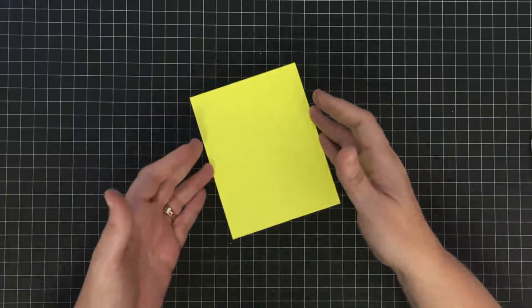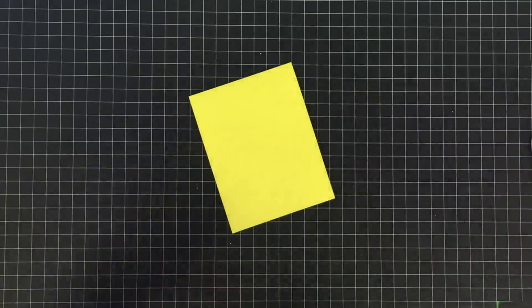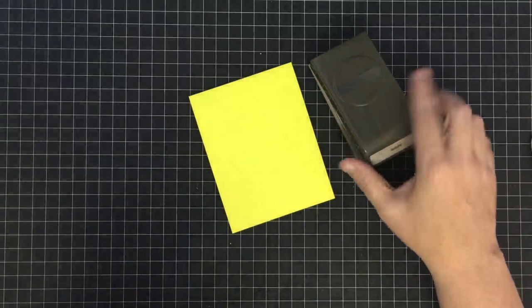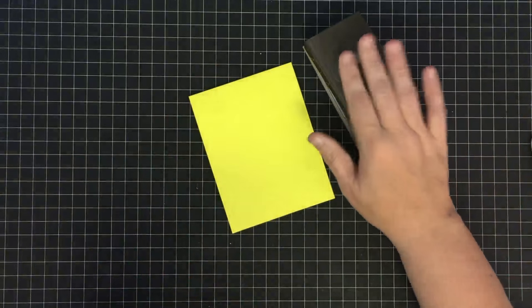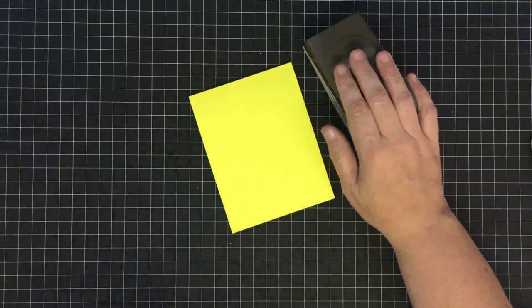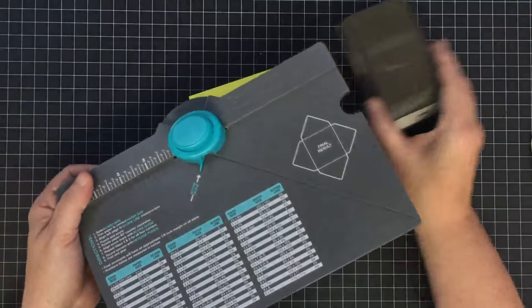Here's what you're going to need: two punches. I'm going to use the word window punch from Stampin' Up and the envelope punch board.